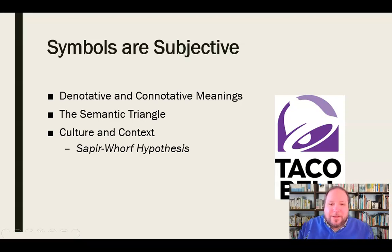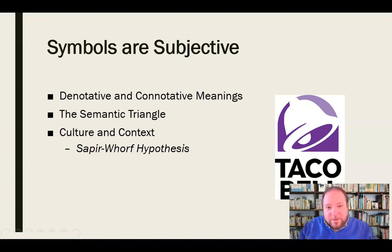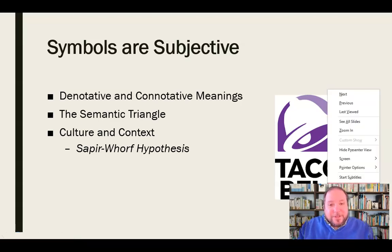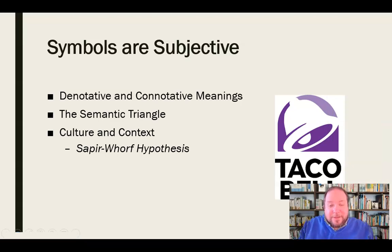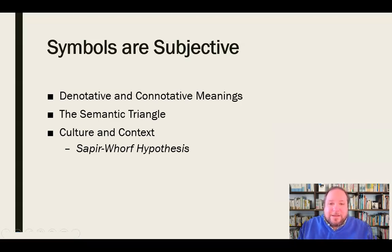An interesting thought about the Sapir-Whorf hypothesis and linguistic relativity. But these are all subjective. Go to a different culture, and money would have fewer definitions and love would have more — maybe a variety of words that mean different kinds of love, so you could differentiate between the love for your mom and love for Taco Bell. So symbols are subjective. They don't mean the same thing to every person. We need to keep that in mind when we're trying to persuade.